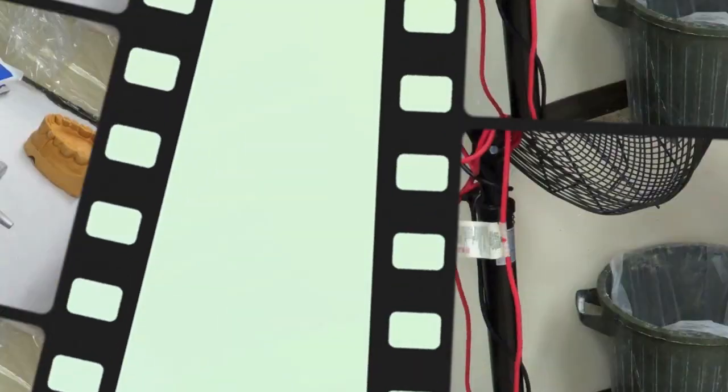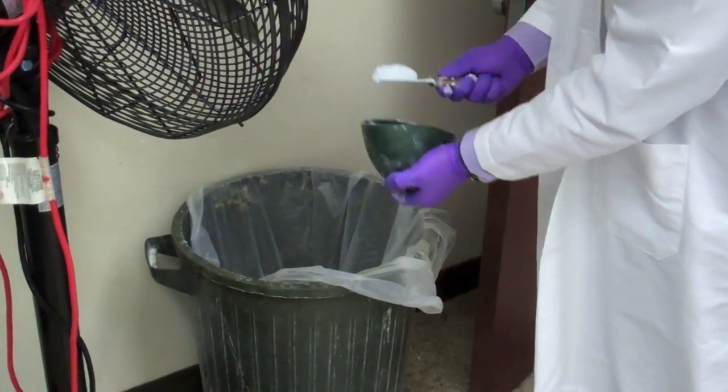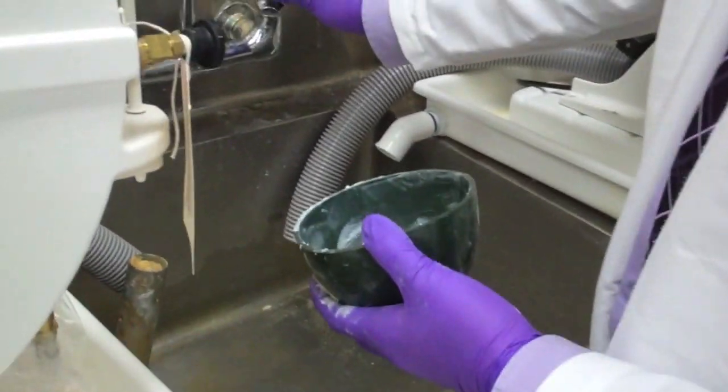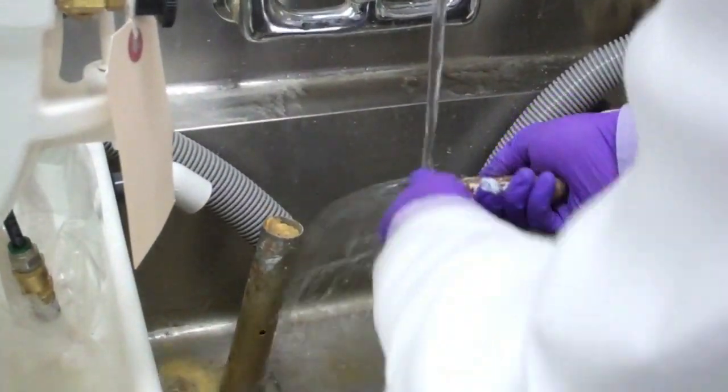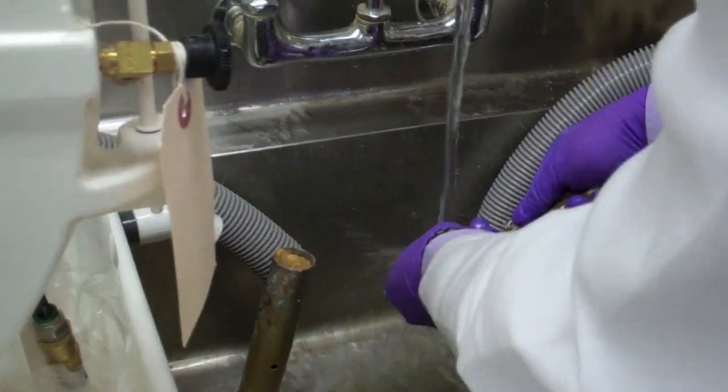Once done with this step, do not throw the residue into the sink. Throw the bulk into the garbage first. Once that is done, you may rinse out the bowl in the sink, as shown.